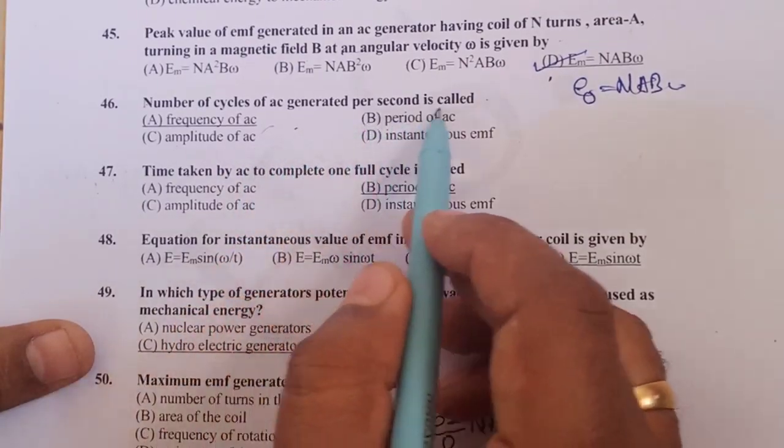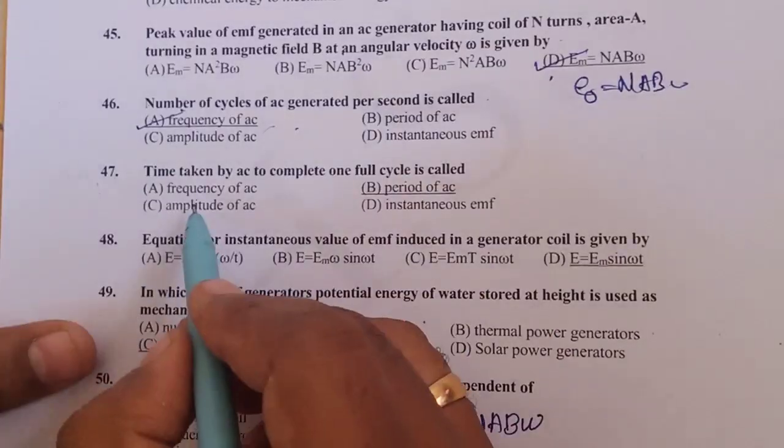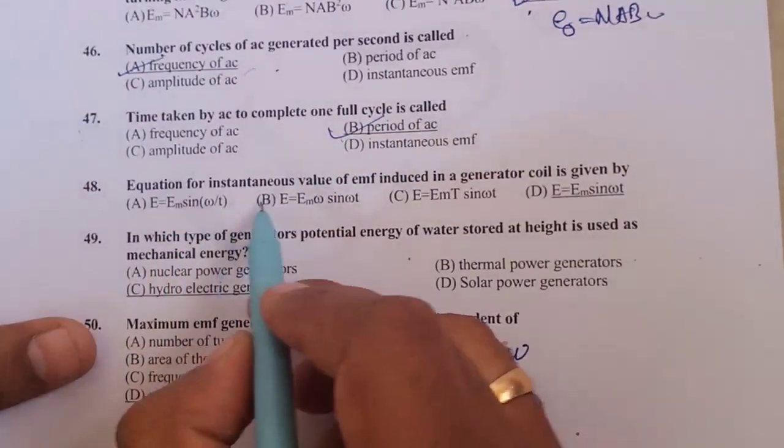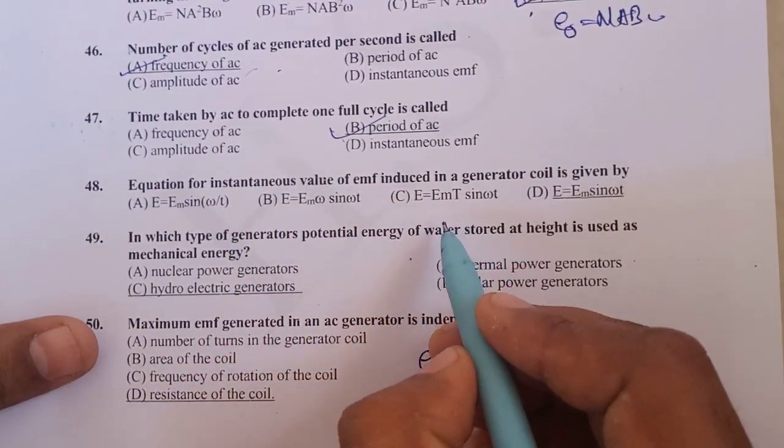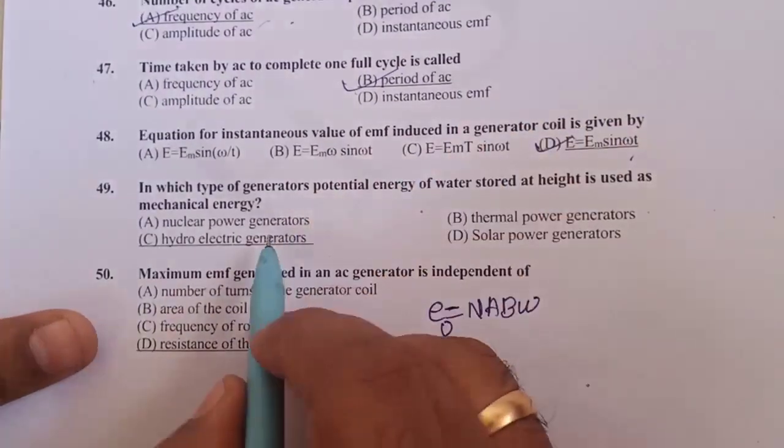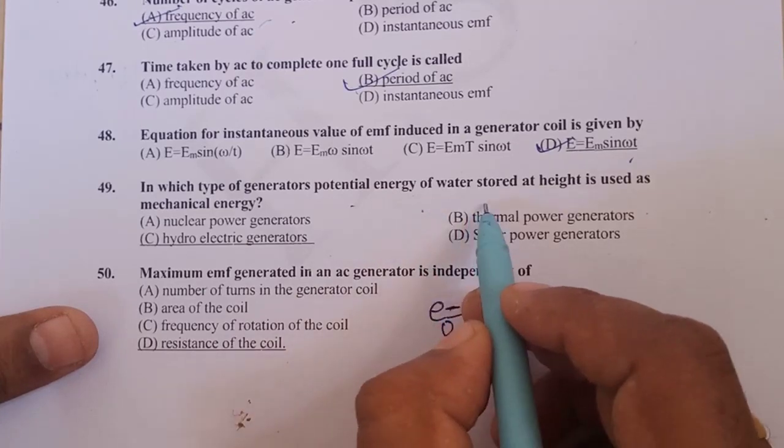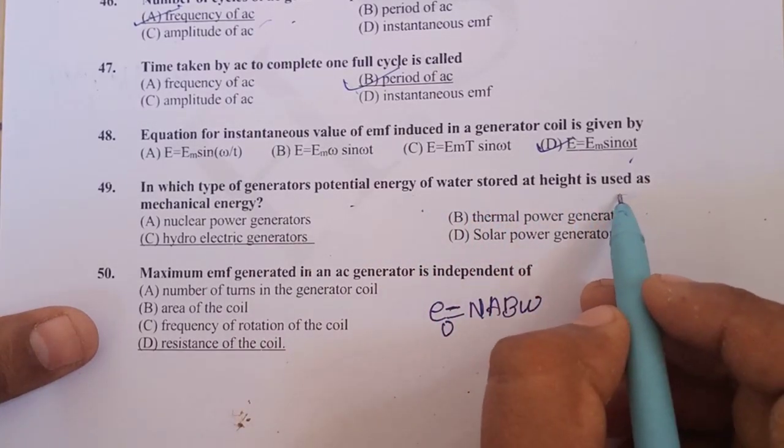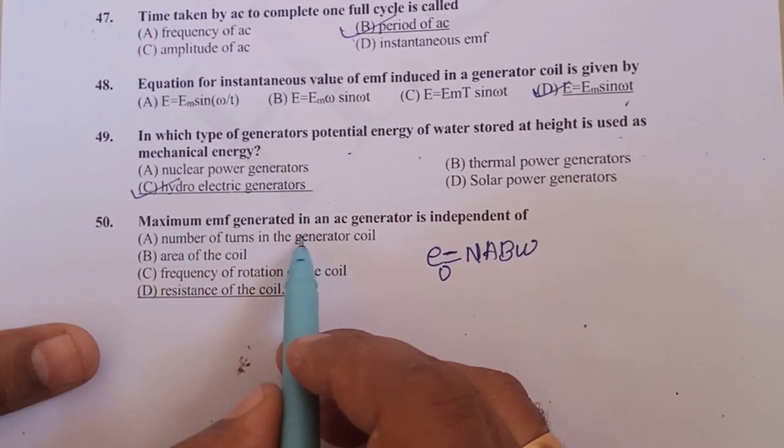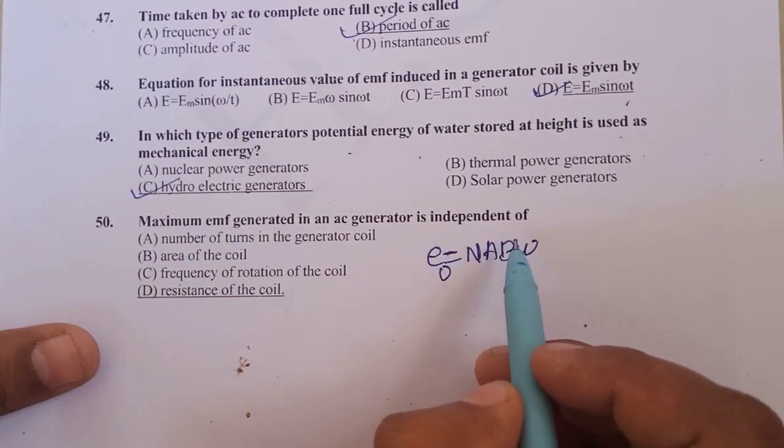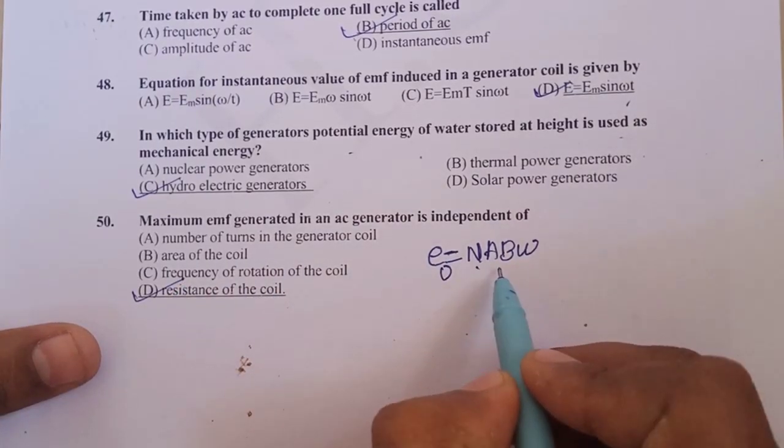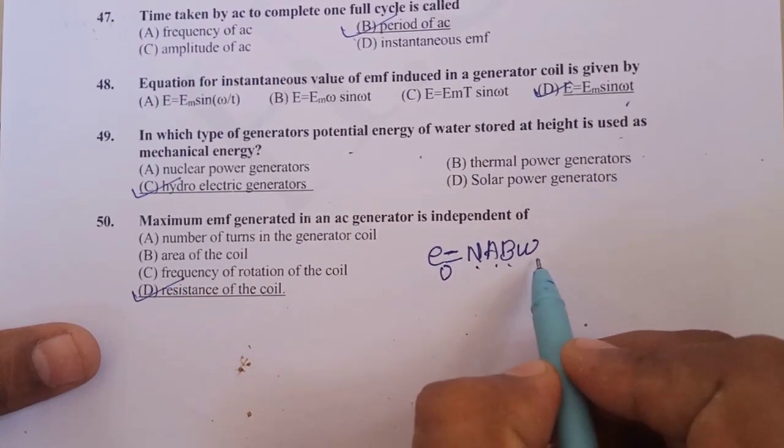Number of cycles of AC per second is called frequency of AC. Time taken by AC to complete one full cycle is called period of AC. Equation for instantaneous EMF is given by E is equal to E₀ sin ωt. In which type of generator potential energy of water stored at height is used as mechanical energy? That is hydroelectric generator. Maximum EMF generated in the generator is independent of resistance of the coil. It depends only on number of turns, area, magnetic field and ω.